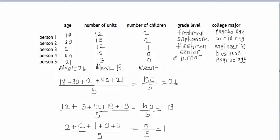We talked about the mean, now let's talk about the median. To find the median of a column of data, we have to put the data values in order from lowest to highest and then take the middle value.